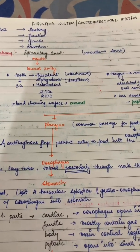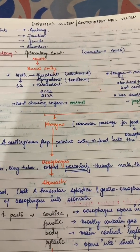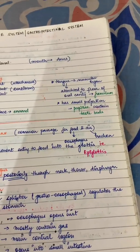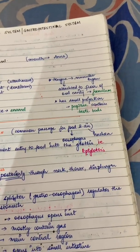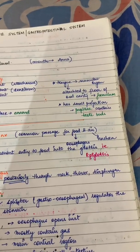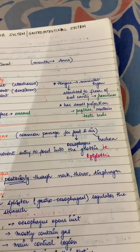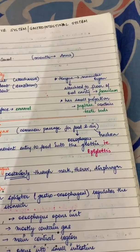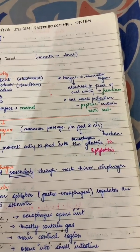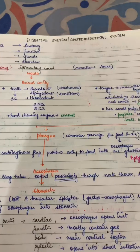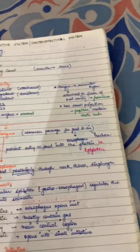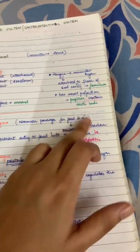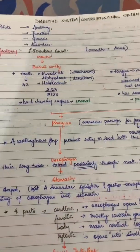The teeth have a hard chewing surface made of enamel — this is very important. The tongue is a muscular organ attached to the floor of the oral cavity via the frenulum. It has small projections called papillae, which have taste buds. In your coaching notes, you'll also be told which taste buds are where, but it's not that important for exams.